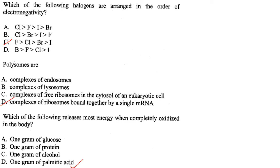Which of the following releases the most energy when completely oxidized in the body? It is palmitic acid — one gram of palmitic acid releases the most energy.